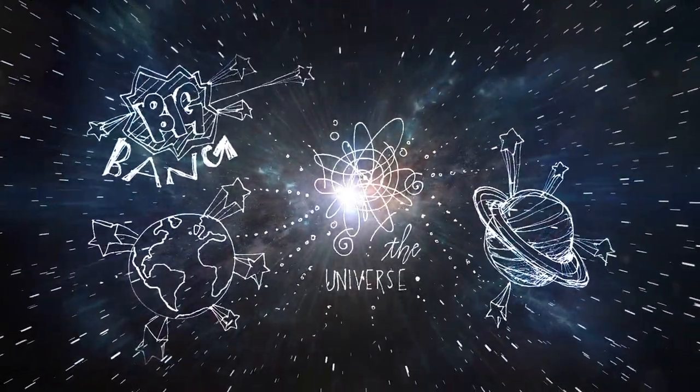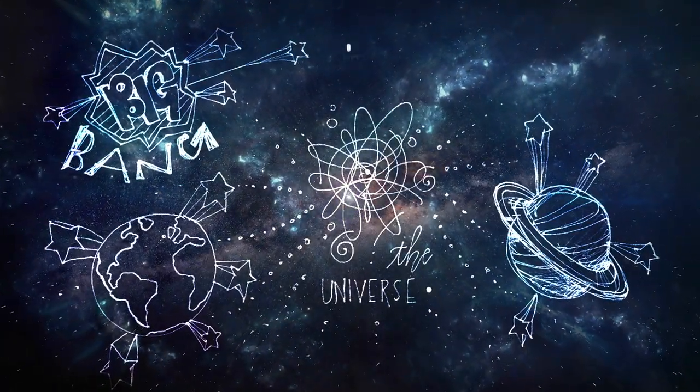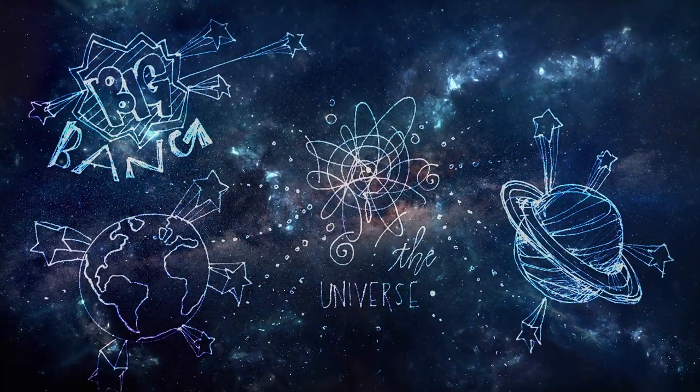Shortly after the Big Bang, the Higgs field was zero. However, as the temperature of the universe dropped below a critical point, the field grew instantaneously. The Higgs field permeated the universe and interacted with the fundamental particles, hence giving them mass.